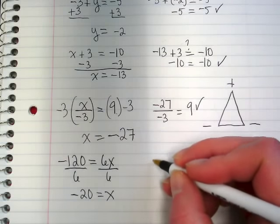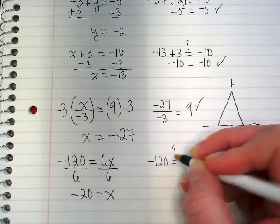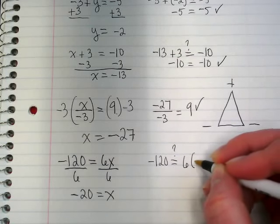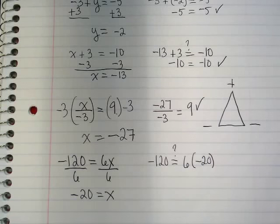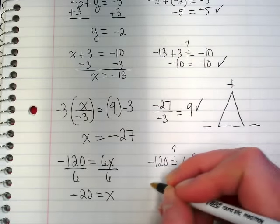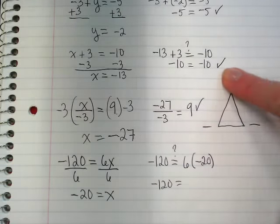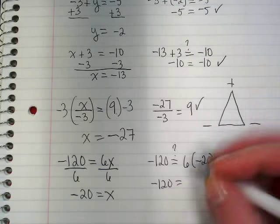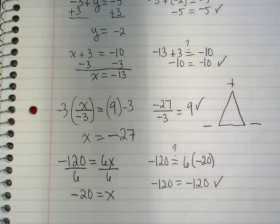We want to go back and check that. Is negative 120 equal to 6 times negative 20? We have positive 6 times negative 20. We get a negative 120, so this one does also check.